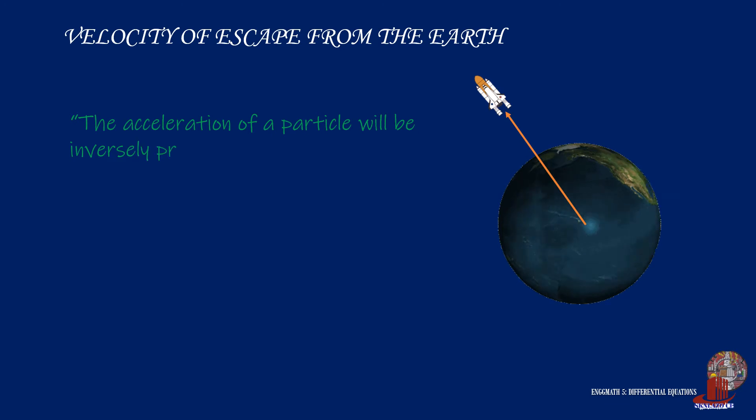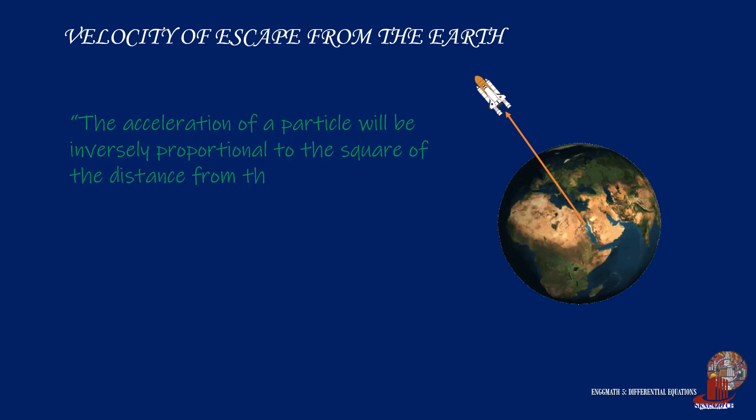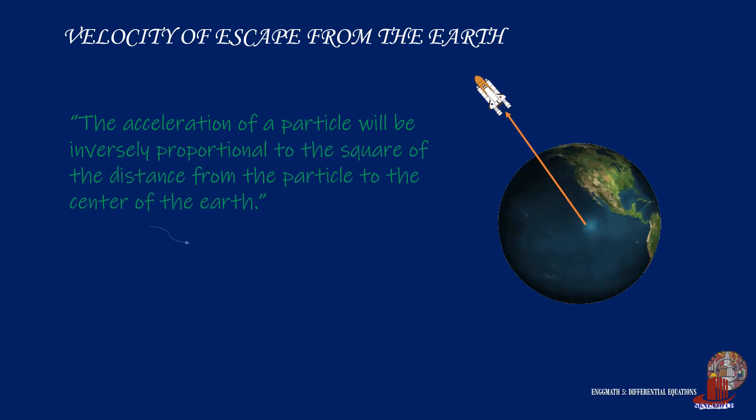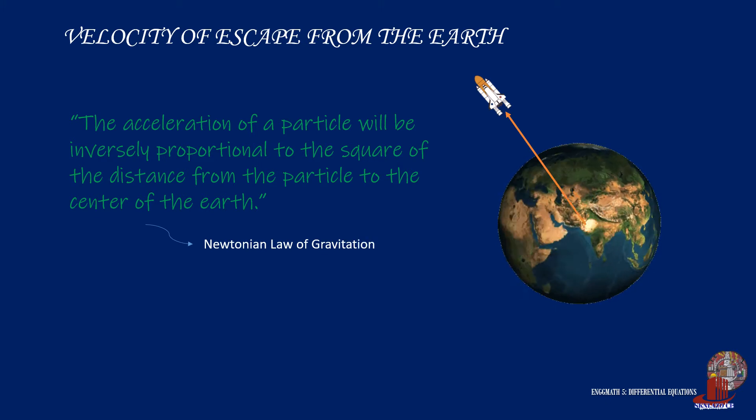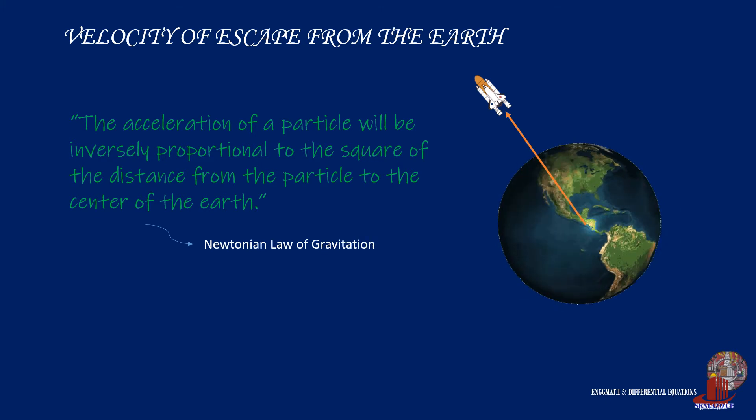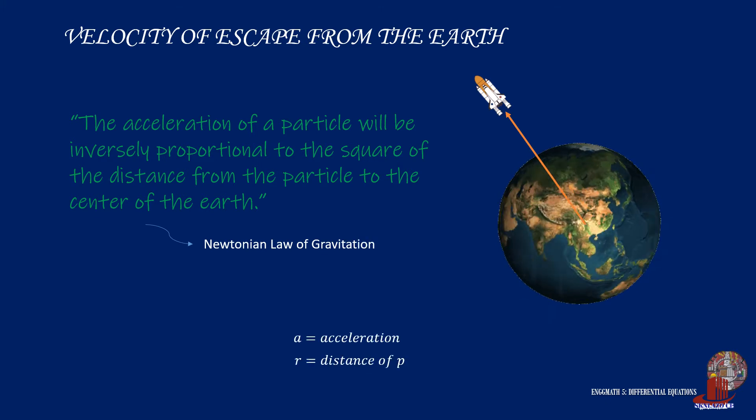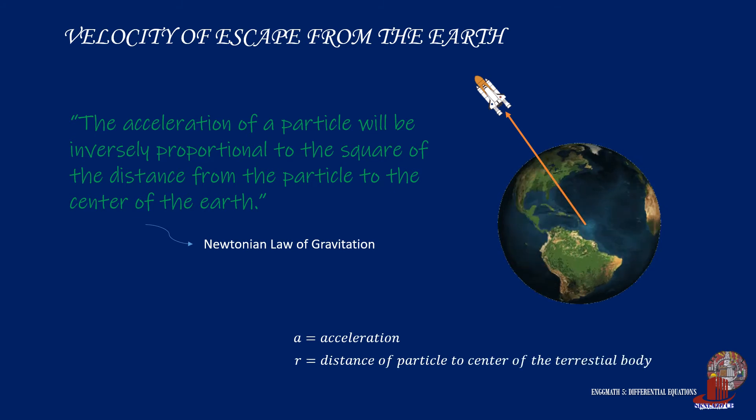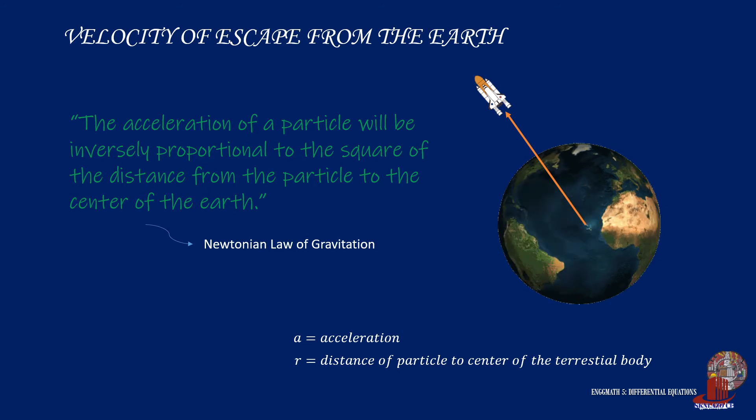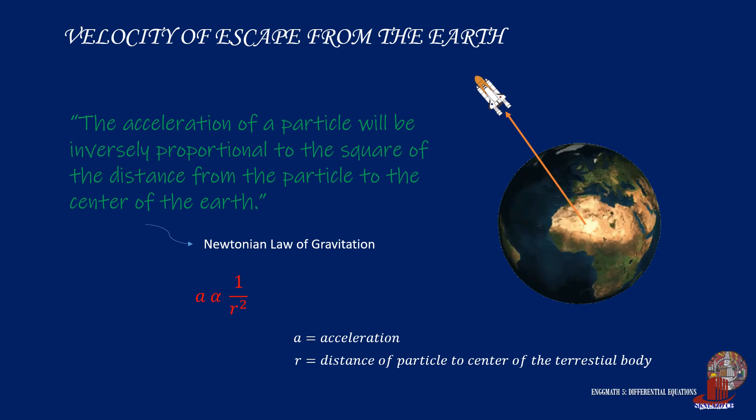According to Newtonian law of gravitation, the acceleration of the particle is inversely proportional to the square of the distance from the particle to the center of the terrestrial body. If we denote acceleration as a and small letter r as the variable distance, we can mathematically translate the law as a is proportional to the reciprocal of the square of r.